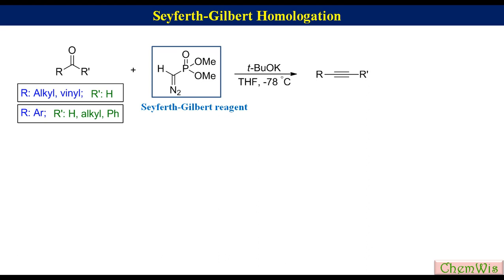This is a homologation reaction because the product has only one carbon higher than the starting material. For making the Seyferth-Gilbert homologation product in a simple way, remove the two carbonyl groups connecting R and R', and then reconnect them via an alkyne.